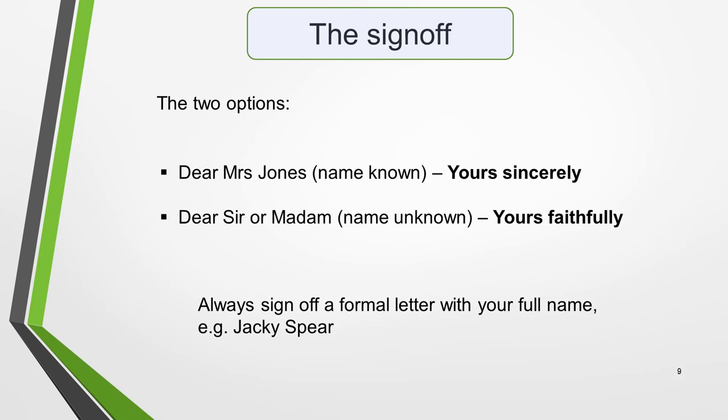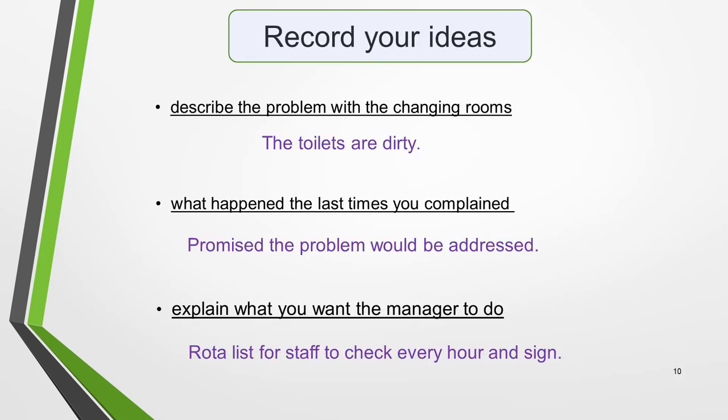We're now ready to think up some ideas to write about. We have the guidelines of the three bullet points to help us, so this won't be difficult. You're only required to write 150 words, so you won't need many ideas. Just make sure that you write about each bullet point and develop each idea fully. The ideas don't have to be the best ones you can think of — go with your first thoughts and don't waste time. However, it's essential that the ideas are directly related to the bullet points.